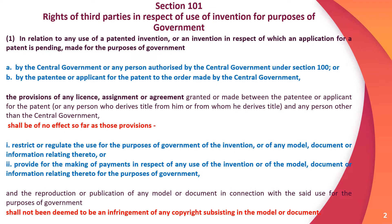Section 101: Rights of third parties in respect of use of invention for purposes of government. Subsection 1 covers any use of a patented invention or an invention in respect of which an application for a patent is pending — that is, before grant or after grant. If before grant, it is considered an application for a patent; if after grant, it is an already patented invention.